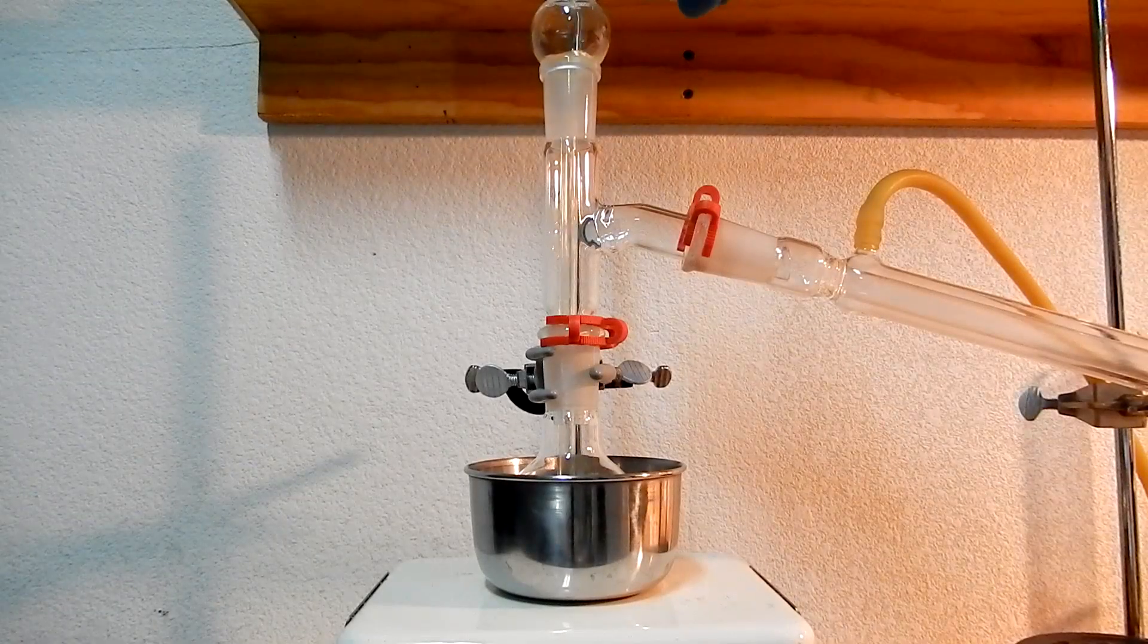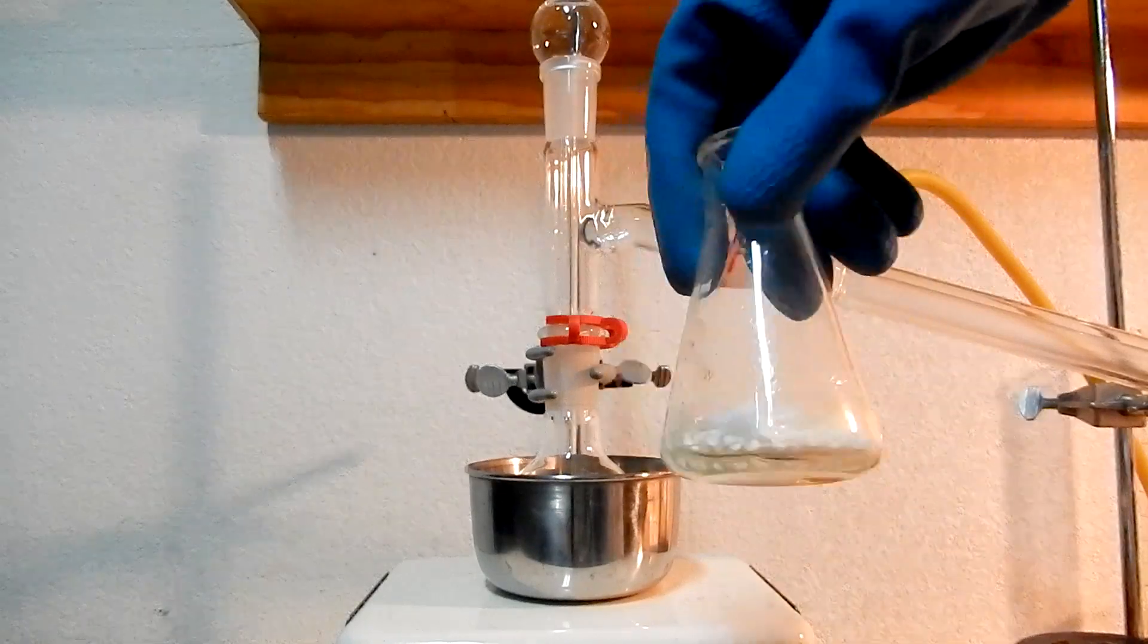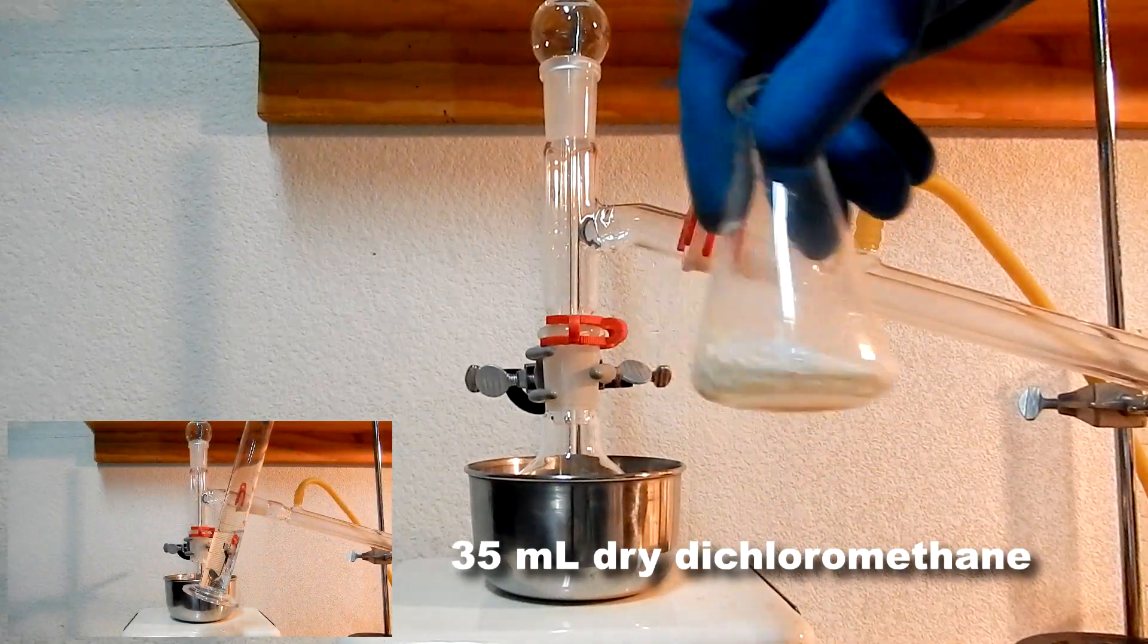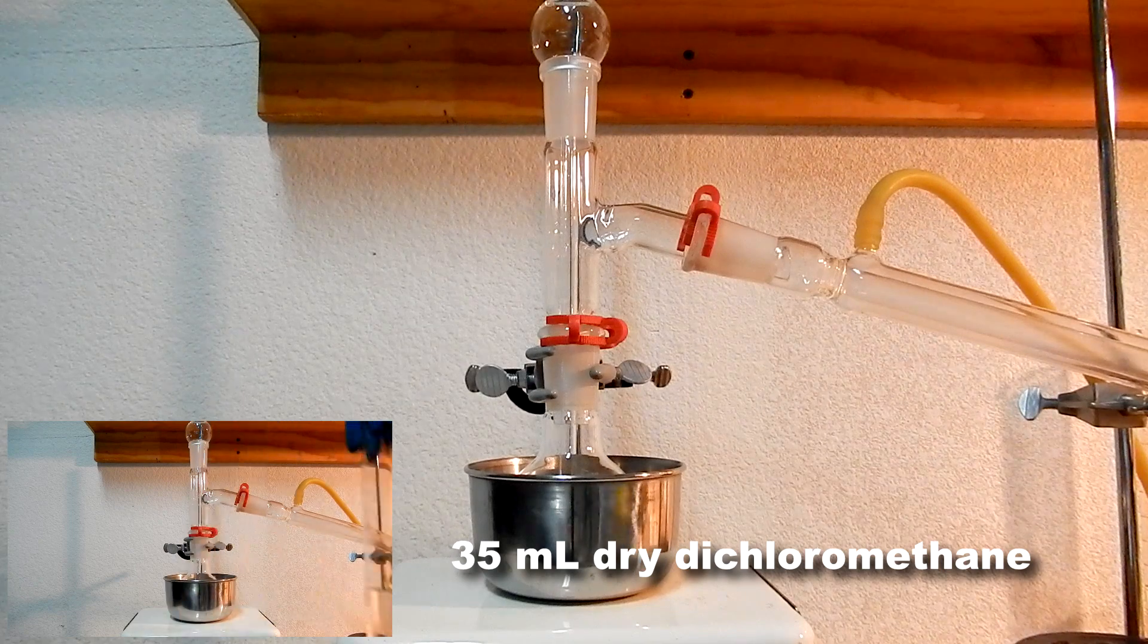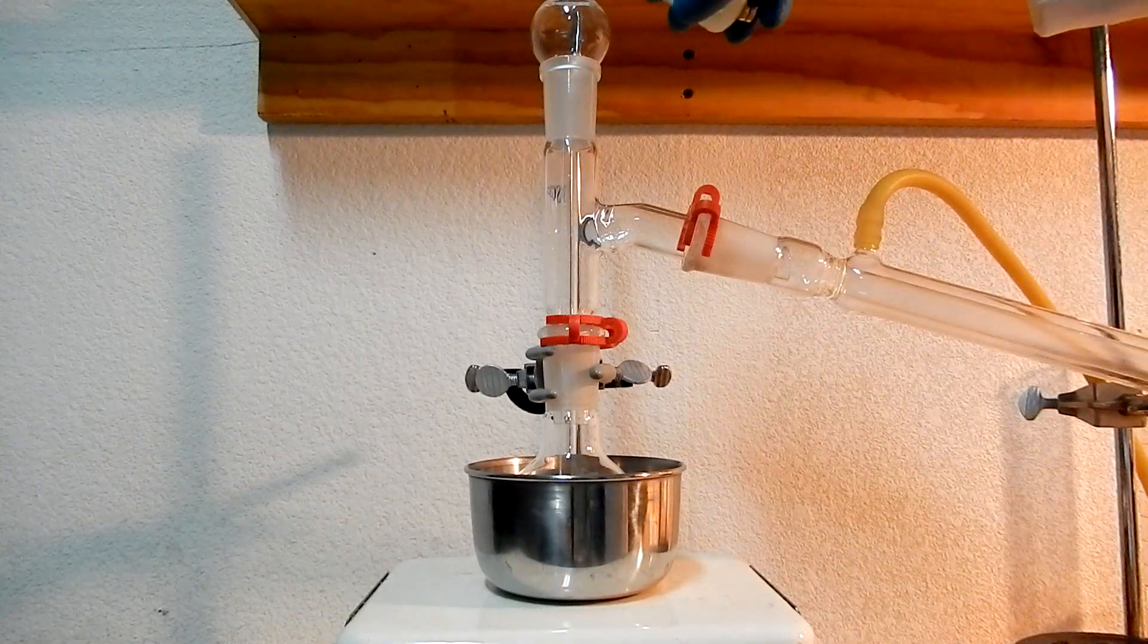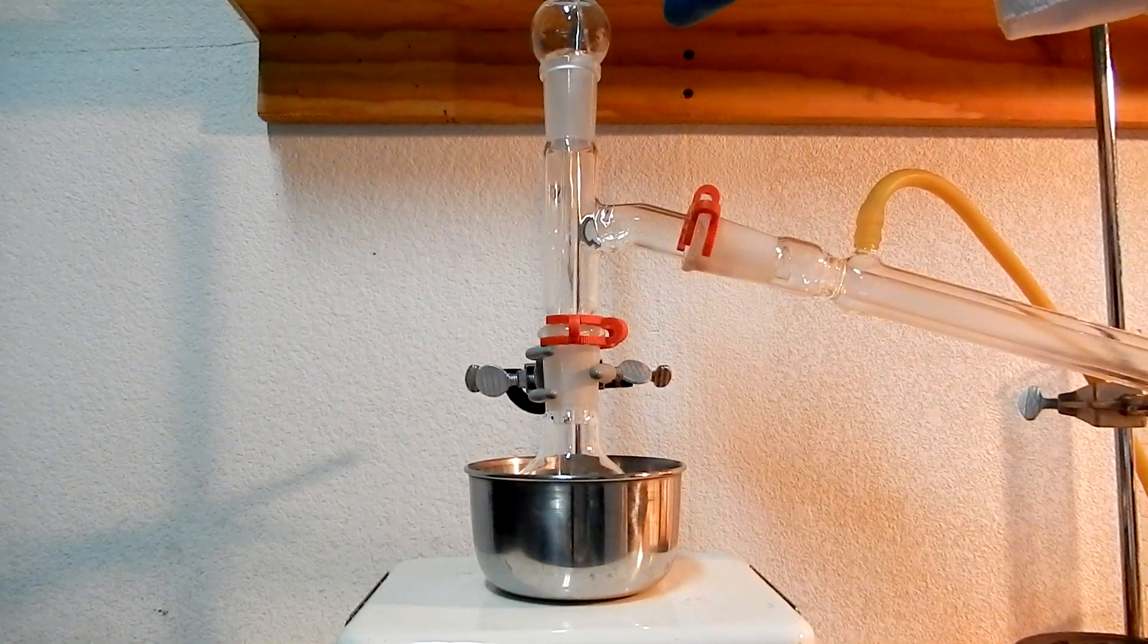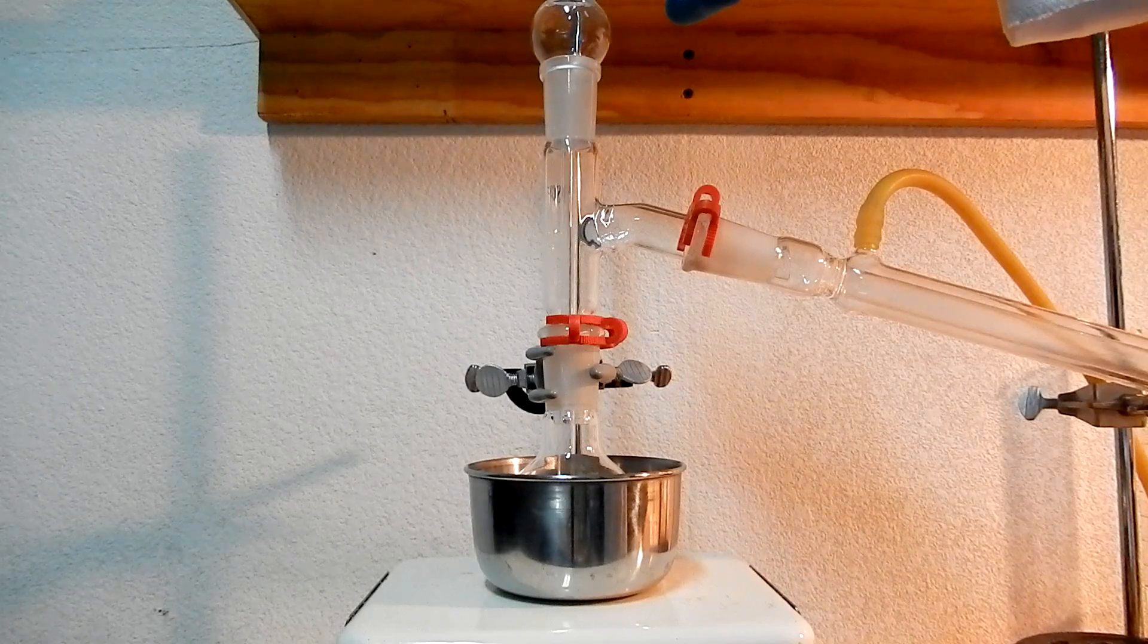Decant the chlorobenzene into a 100 milliliter round bottom flask. Rinse the Erlenmeyer flask and calcium chloride with a total of 35 milliliters of dry dichloromethane in small portions. Add all of the dichloromethane rinses to the 100 milliliter round bottom flask. Rinsing with dichloromethane ensures that none of the chlorobenzene is lost on the desiccant.